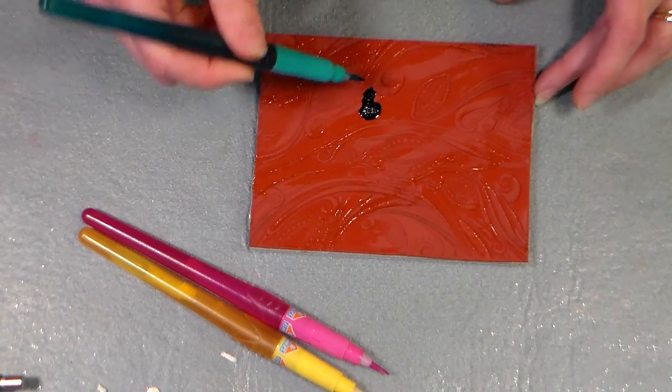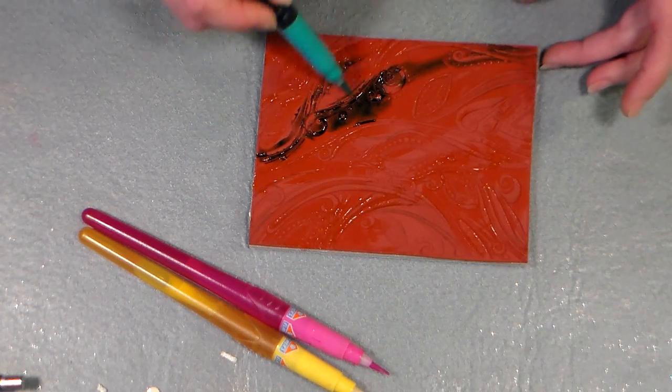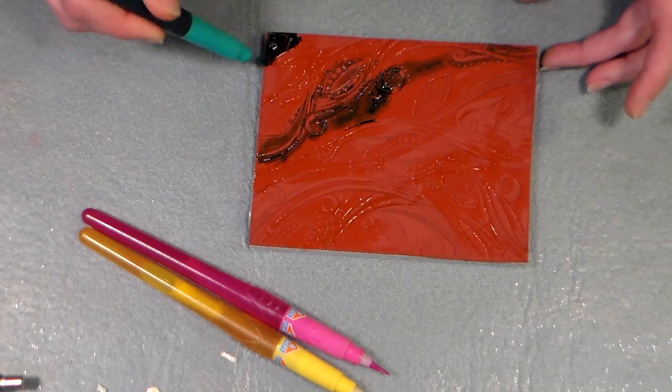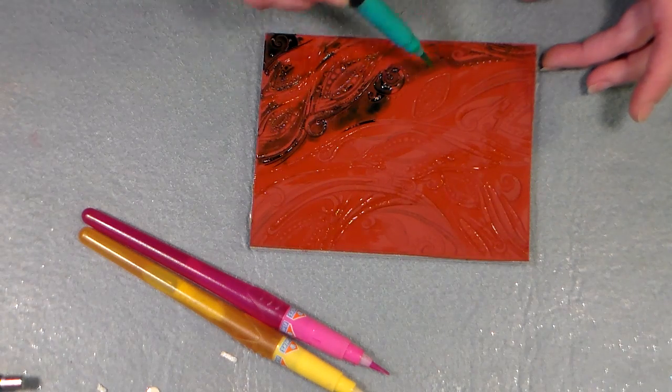I'm going to use a little bit of this teal. You could use re-inkers as well, but you'd want to water them down a little bit. You could use food coloring or any sort of watercolor or dyes - you just want it pretty juicy.